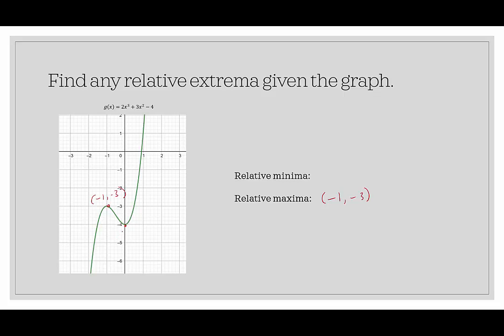Here we have a relative minima. That relative minima would be at (0, -4), right? Because that -4 is lower than all other points near it. So we would have (0, -4) as our relative minima.